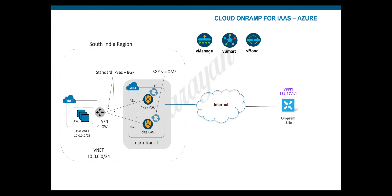This is in continuation of one of the previous videos where we looked at configuring Cloud onRamp for IaaS with AWS. In this video we will look at configuring Cloud onRamp for IaaS with Azure and extend the SD-WAN fabric connectivity using transit v-net architecture.